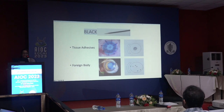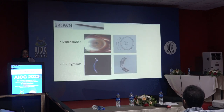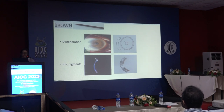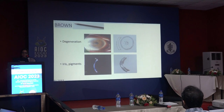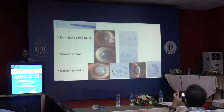Brown is used for degenerations — such as spheroidal degeneration or arcus senilis — and dystrophies that need to be distinguished, as well as iris and iris pigments. Blue is used for corneal edema: blue dots for epithelial edema, blue patches for stromal edema, blue lines for Descemet's folds in severe corneal edema. In the slit view, show increased thickness on the posterior side and Descemet's folds.